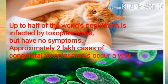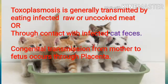Even though half of the world population is infected by the disease, approximately two lakh cases of congenital toxoplasmosis occur per year. How is this infection transmitted?